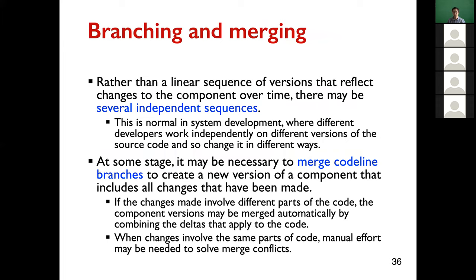Two important concepts in distributed or centralized version control collaboration are branching and merging. Branching is having multiple versions derived from the same version — corresponding to a tree-based evolution. Merging is when different branches need to be synchronized into a single version — you merge them together.